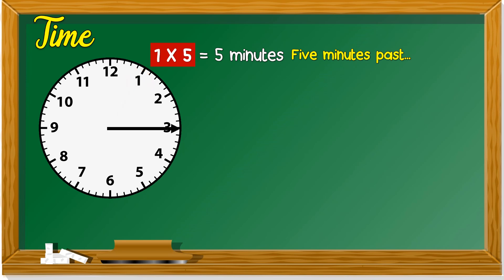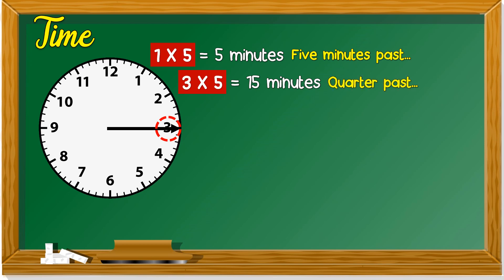When the minute hand is at 3, we get 3 times 5, which is 15. So it's 15 minutes — we can say 'fifteen minutes past' or 'quarter past.'